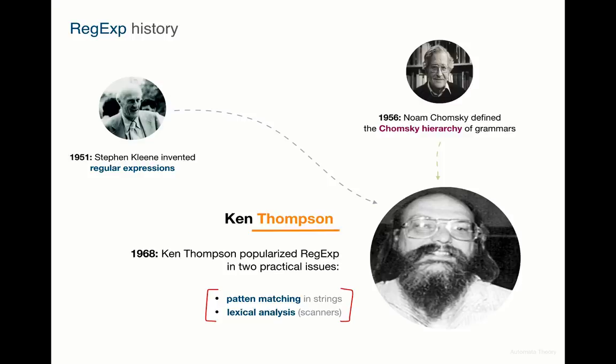For implementation, Thompson used exactly the finite automata. His construction became one of the canonical approaches and is known as the Thompson construction. The Regexp implementation based on state machines is one of the fastest implementations, which is why it is still widely used in practice. For example, parser generator tools such as Bison use it when building tokenizer modules.